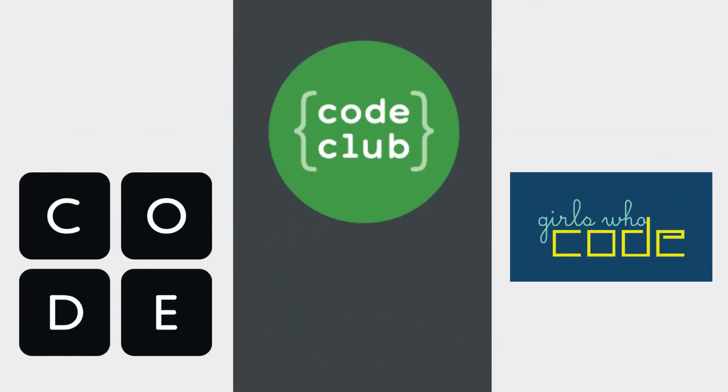Some of the most popular Learn to Code organizations for primary and secondary students include Code.org, which has a popular series of projects and coding micro-lessons called Hour of Code, Code Club International, which is a network of free volunteer-led coding clubs for children aged 9 through 13,